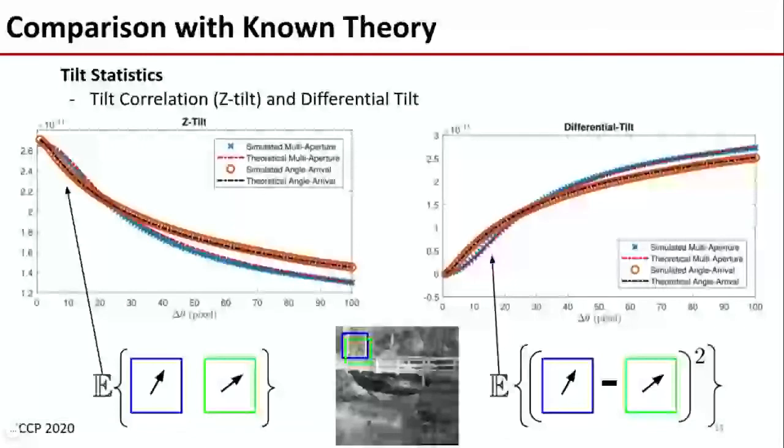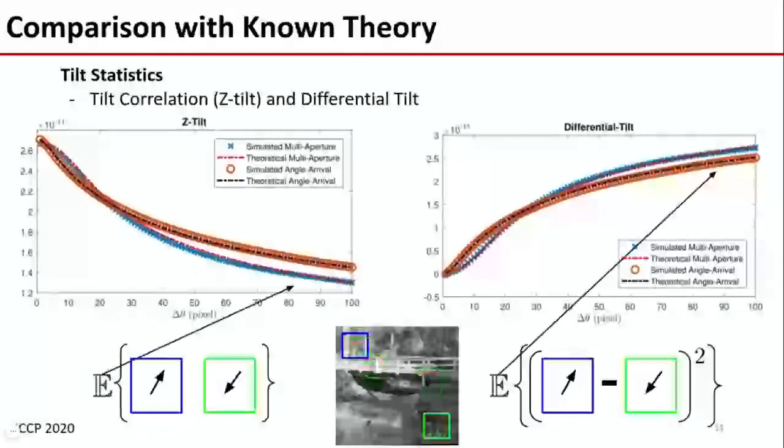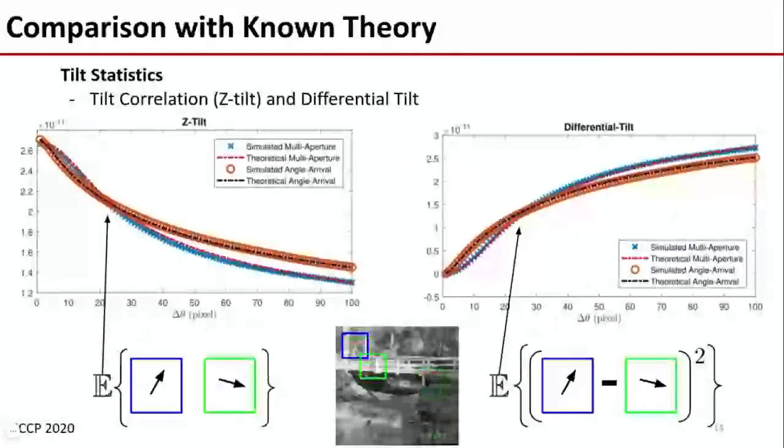The first experiment we perform is the spatial tilt statistics as a function of pixel separation. Between our approach, the multi-aperture correlations, and the angle of arrival correlations, we find a considerable match in both the tilt correlation and their differential tilt variance.